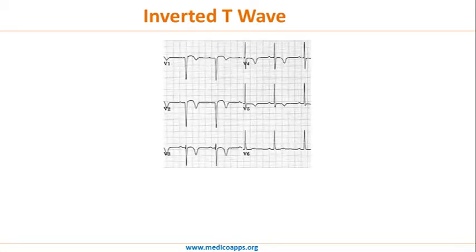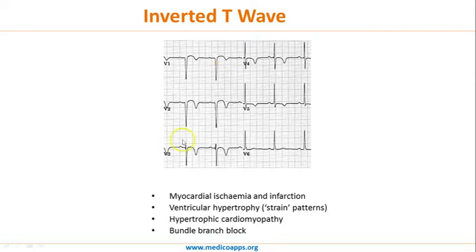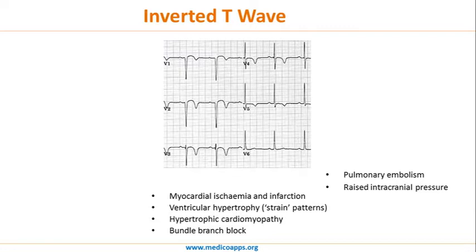Let's move to inverted T waves. The inverted T wave is easy to recognize — the T wave is simply inverted. Based on the leads in which it is inverted, we can determine where the pathology is. The most common causes include myocardial ischemia and infarction, ventricular hypertrophy with strain pattern, hypertrophic cardiomyopathy, bundle branch blocks, pulmonary embolism, and raised intracranial pressure. Inverted T waves can also be a normal finding in children.